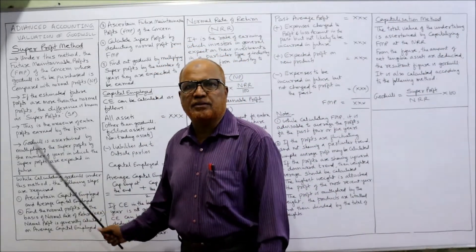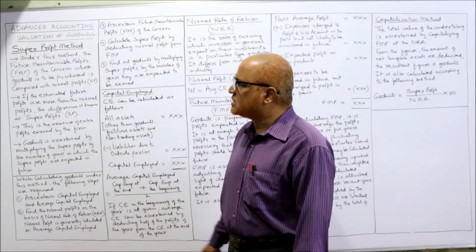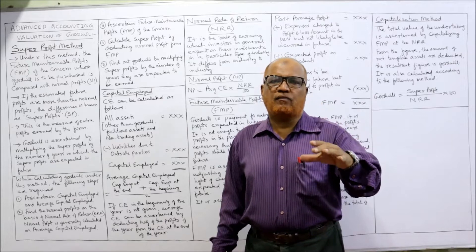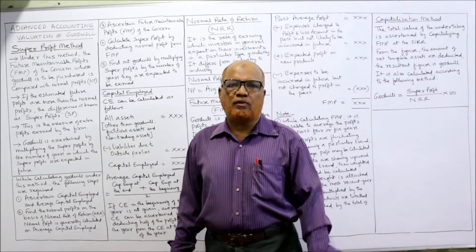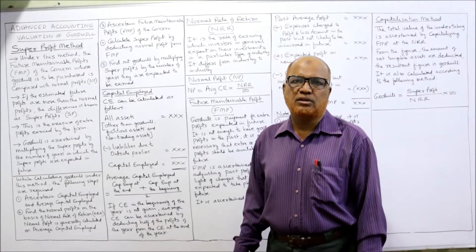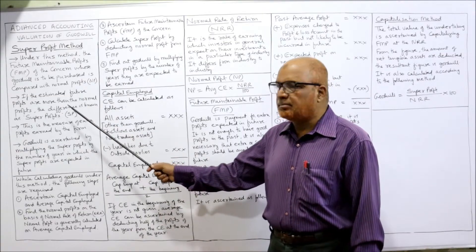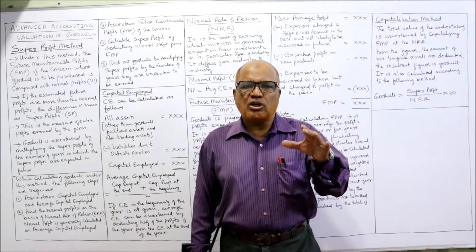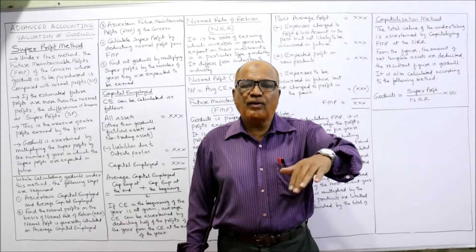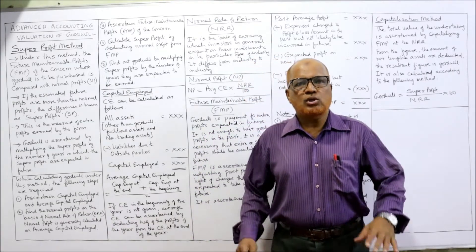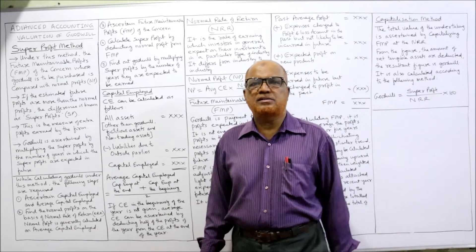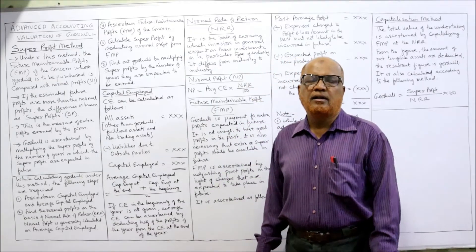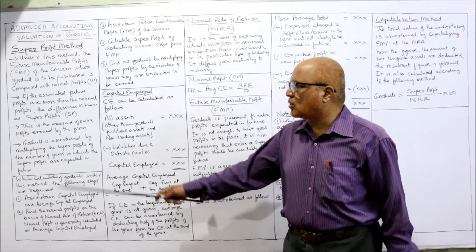Now the second method — super profit method. Under this method, the future maintainable profit of the concern whose goodwill is to be purchased is compared with the normal profit. So we compare the expected future profit of the concern with the normal profit to get the value of goodwill. If the estimated future profits are more than the normal profit, the difference is known as super profit. For example, if the normal profit of a business is 2 lakh rupees but the future maintainable profit is 3 lakh, the excess of 1 lakh is the super profit.